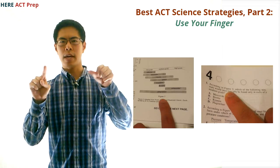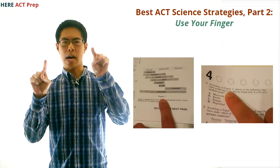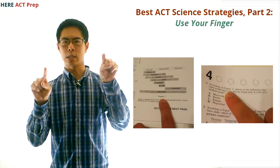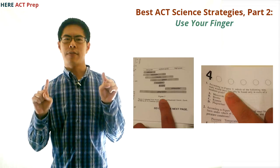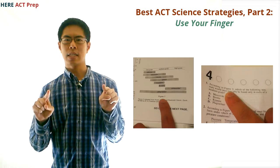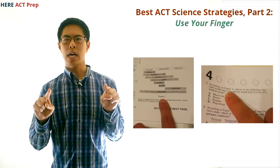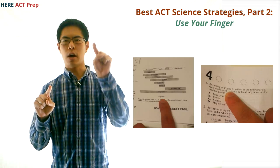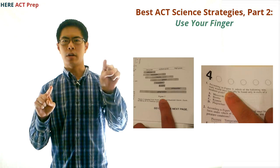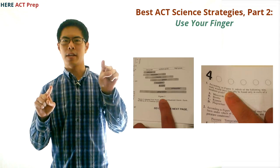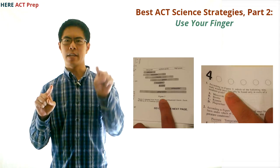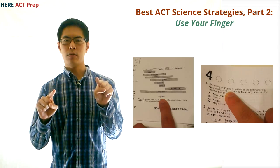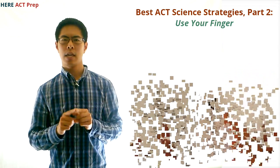So you'll be using both your hands to help your eyes find the information you need as quickly as possible. Next, find out what the question is asking and then move your eyes back to your left index finger, which should already be at the table, chart, or trial you need to look at, and figure out the answer as quickly as possible. Then repeat this process for each question.